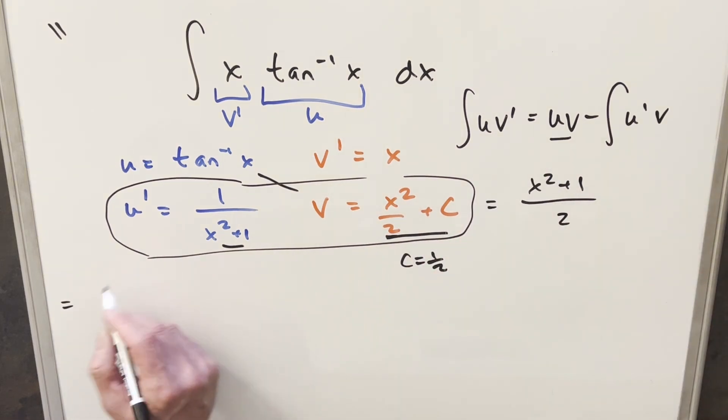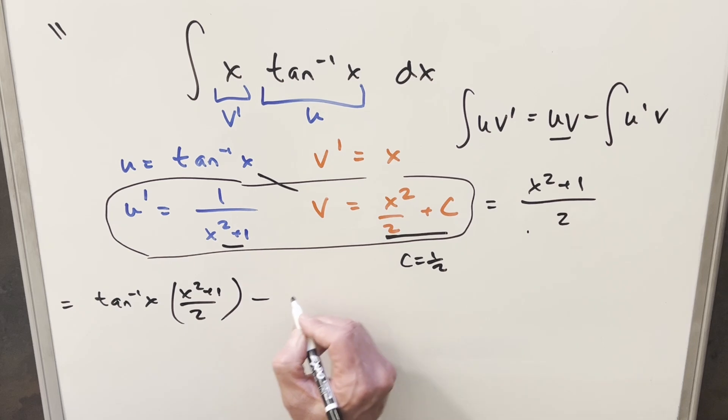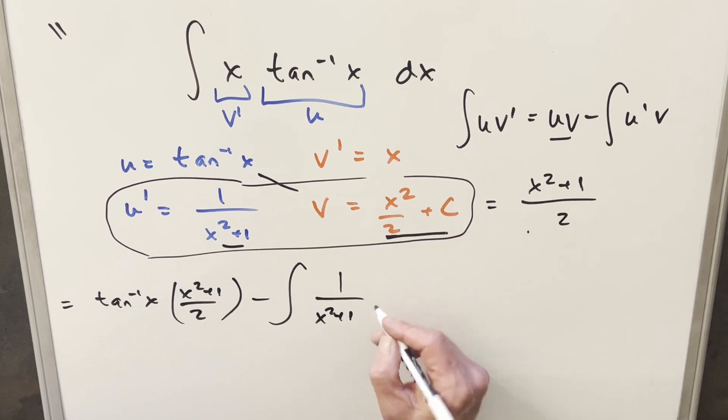So putting this all together with our formula, we'll have our u v value, so we're going to have just arctan of x. We'll use this v value, so this is going to be times x squared plus 1 over 2. And then we're going to have minus this integral of this row right here, so this is going to become 1 over x squared plus 1. And then we're multiplying this times our v value, we'll write this in, x squared plus 1 all over 2.